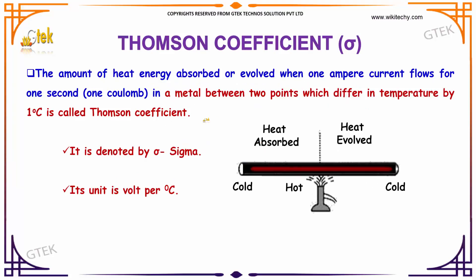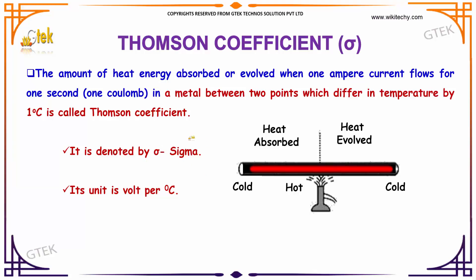The amount of heat energy absorbed or evolved when one ampere of current flows for one second in a metal between two points which differ in temperature by one degree Celsius is called the Thomson coefficient. It is denoted by the symbol sigma and its unit is volt per degree Celsius.